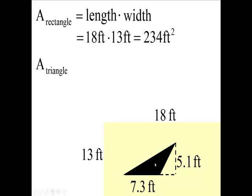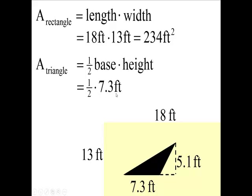Now we want the area of the triangle. And that is one half the base times the height. So we're going to label the base here, 7.3 goes here, times the height, which is 5.1.